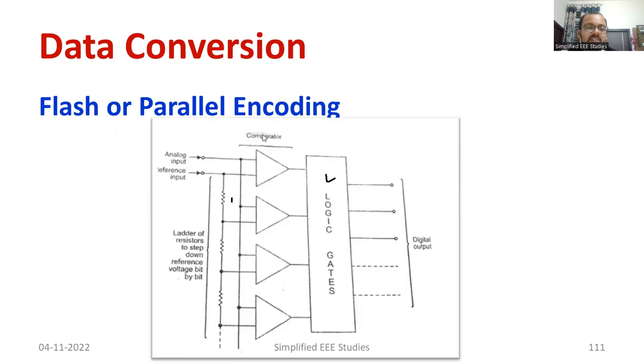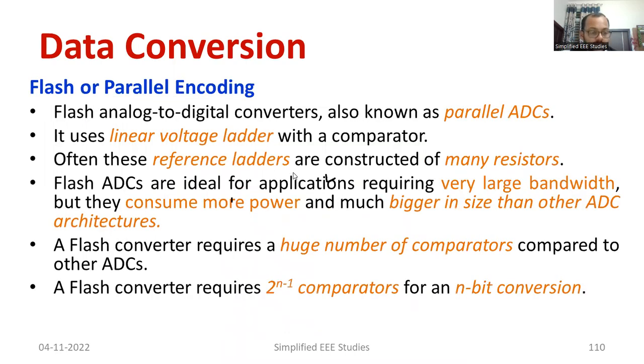What are the major drawbacks of parallel encoding? The major drawback which I mentioned is, as the number of conversions required, as the size increases, we require more number of comparators, more resistors required. By the way, the system size is getting increased, bigger size. That is the main problem.